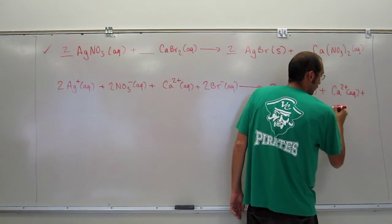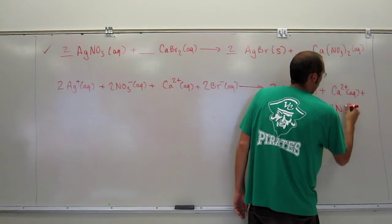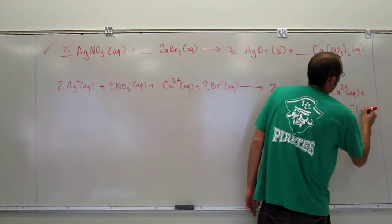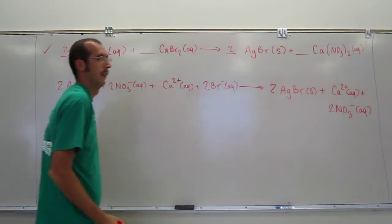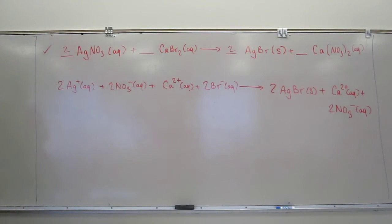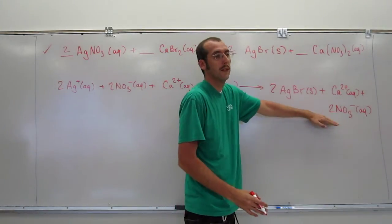And then NO3 minus, or two NO3 minus, aqueous. You need to know that. That's, remember, that's like chapter three stuff. Okay, so that's the total ionic equation, right?